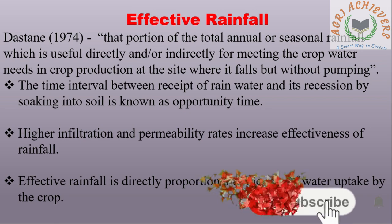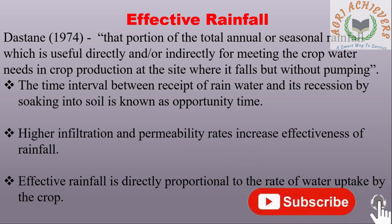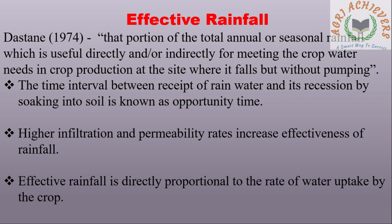Effective Rainfall (1974): The portion of total annual or seasonal rainfall which is useful directly and/or indirectly for meeting the crop water needs in crop production at the site where it falls, but without pumping, is called effective rainfall. The time interval between receipt of rainwater and its recession by soaking into soil is known as opportunity time. Higher infiltration and permeability rates increase effective rainfall. Effective rainfall is directly proportional to the rate of water uptake by the crops.